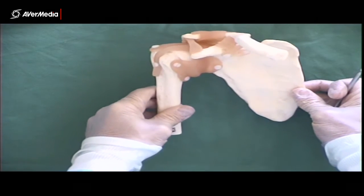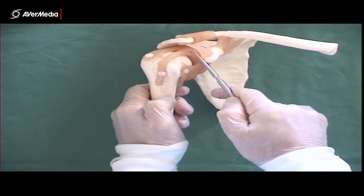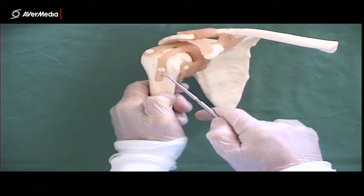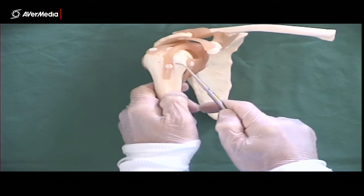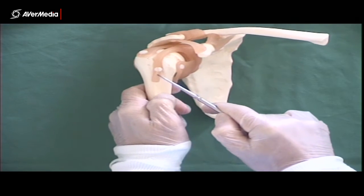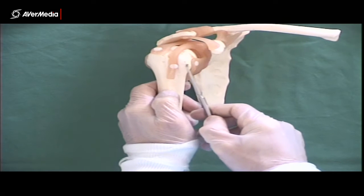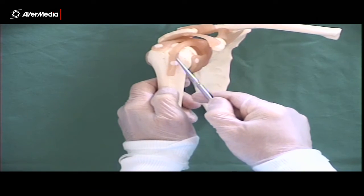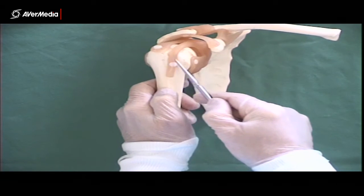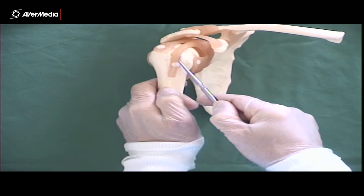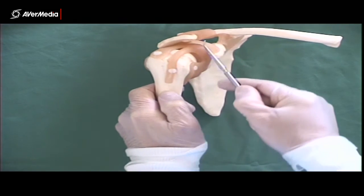Then the transverse humeral ligament. Now I can't show you that on this model, but I can show you where it is. This other structure here is the tendon of the long head of biceps brachii, running through the intertubercular sulcus here between the lesser and greater tubercles. So here's the tendon. Now in life and on specimens, you will find that there are fibers that run across the tendon, from the lesser to the greater tubercle. And those fibers are the transverse humeral ligaments. That can be seen on specimens, but not on this model.